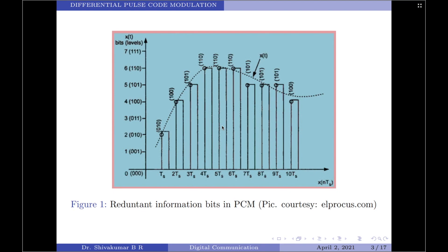The meaning of this high correlation is that in an average sense, the signal does not change rapidly from one sample to the next, with the result that the difference between adjacent samples has a variance that is considerably smaller than the variance of the signal itself. When these highly correlated samples are encoded using the standard PCM, the resulting signal will contain redundant information. For example, if you consider these 3 samples having the exact same codeword, if I have to transmit these 3 samples, then I will have to transmit 110 thrice. So the same information is transmitted 3 times, which causes redundancy.